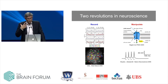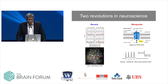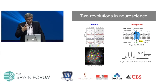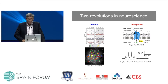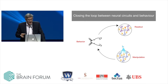Optogenetics allows us to use light to either increase or decrease activity in genetically defined neural populations with millisecond precision. Channelrhodopsin — the protein that has captured the attention of the neuroscience community — allows you to use blue light to activate neurons with millisecond precision. However, these two revolutions in reading and manipulating neural circuits have proceeded more or less in parallel, making it very difficult to simultaneously read out and manipulate activity from the same neurons in vivo, which is crucial to make causal links between specific activity patterns and behavior.